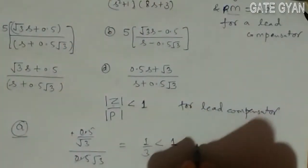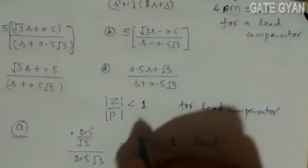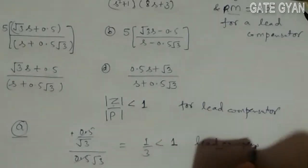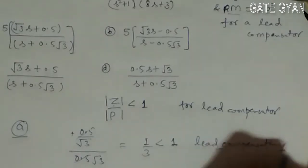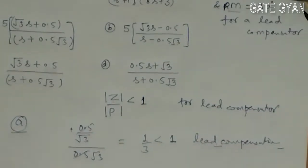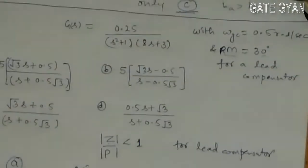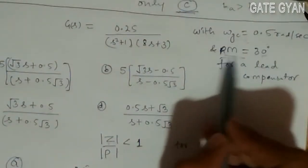Options A and C are lead compensators as |z|/|p| < 1. Options B and D are eliminated. Now, from A and C, we will check using the given data (ωgc and phase margin) to find the correct answer.